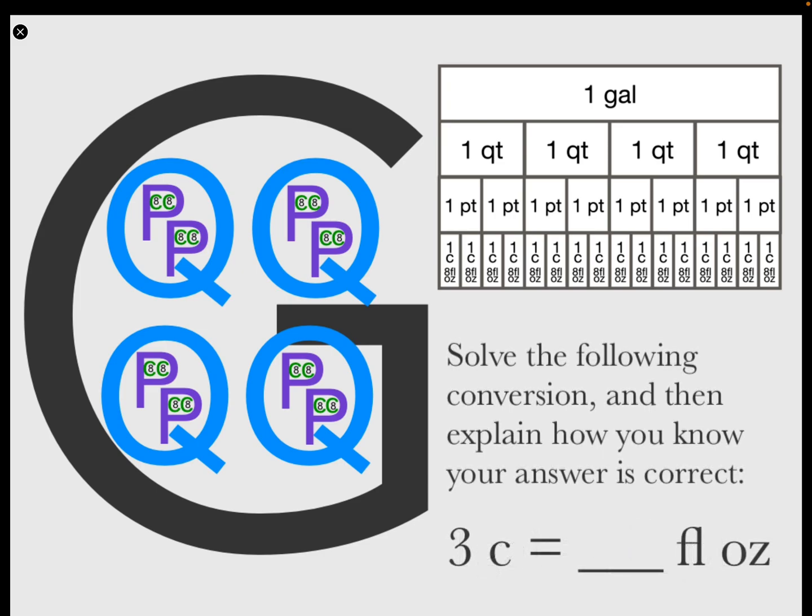Three cups equals how many fluid ounces? 24 fluid ounces equals three cups.